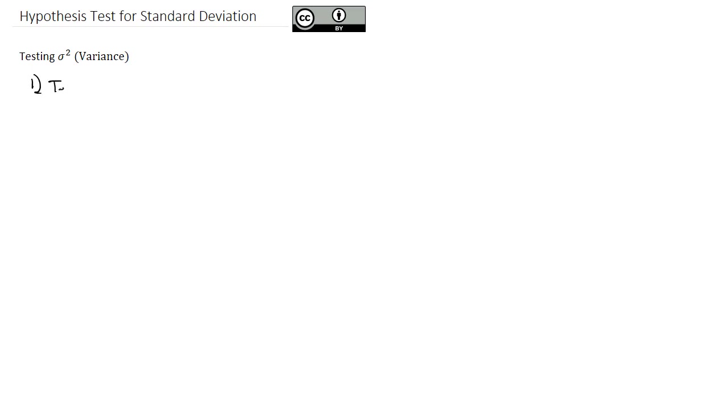The main difference is when we get to the test statistic calculation. The test statistic calculation for variance is going to be a chi-squared statistic, which is calculated by taking the sample size minus 1, multiplying by the variance of the sample, and dividing by the variance of the population. The degrees of freedom is always the sample size minus 1.